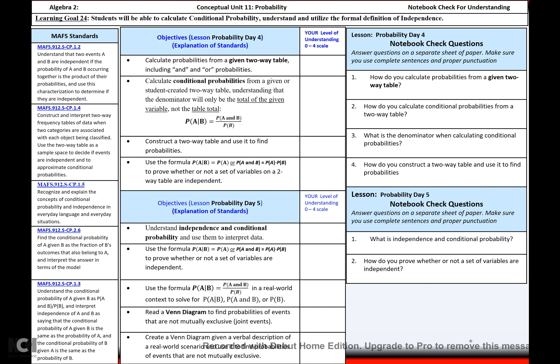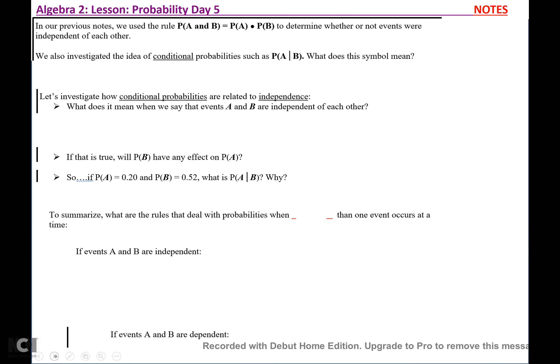We are going to continue talking about probability. In our previous notes, we used the rule P(A and B) = P(A) × P(B) to determine whether or not events were independent of each other. We also investigated the idea of conditional probabilities, such as P(A|B), which means the probability of A occurring given that B has already occurred. So let's investigate how conditional probabilities are related to independence.